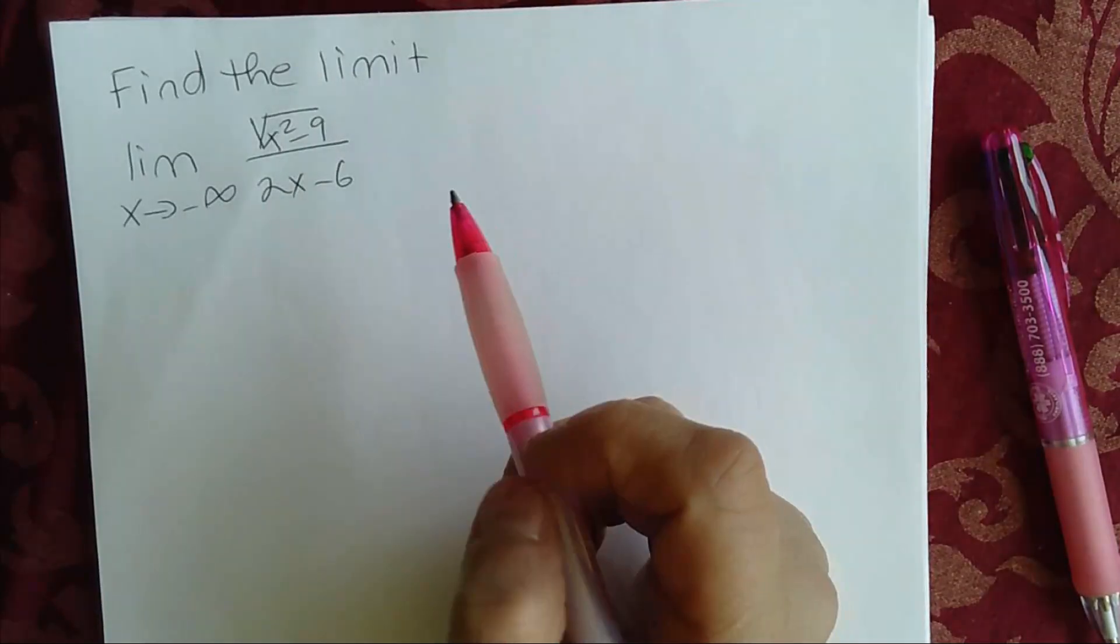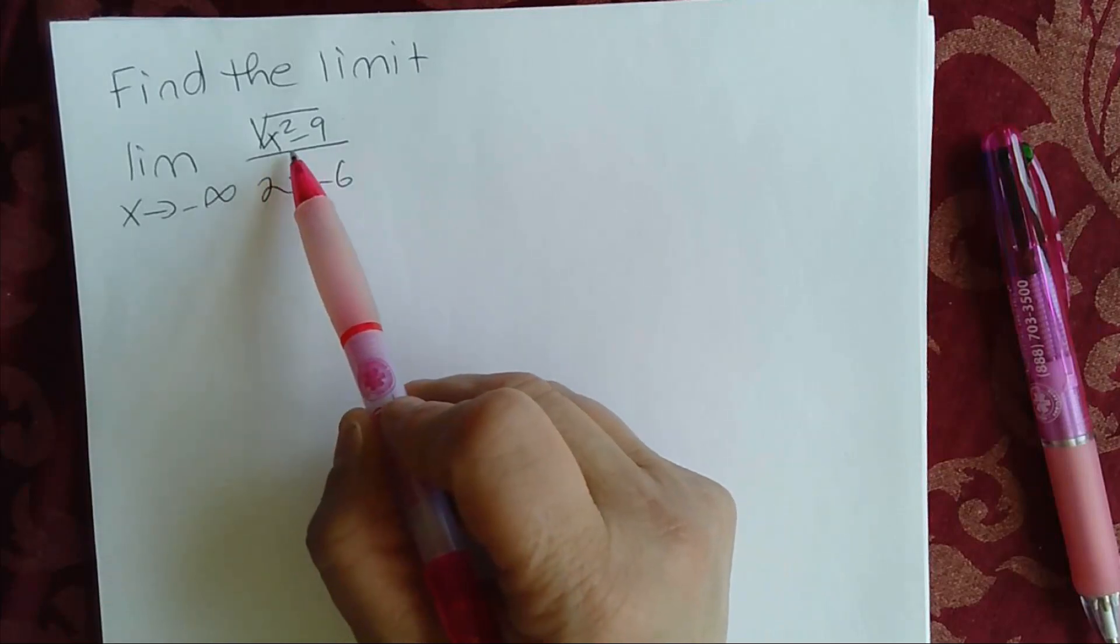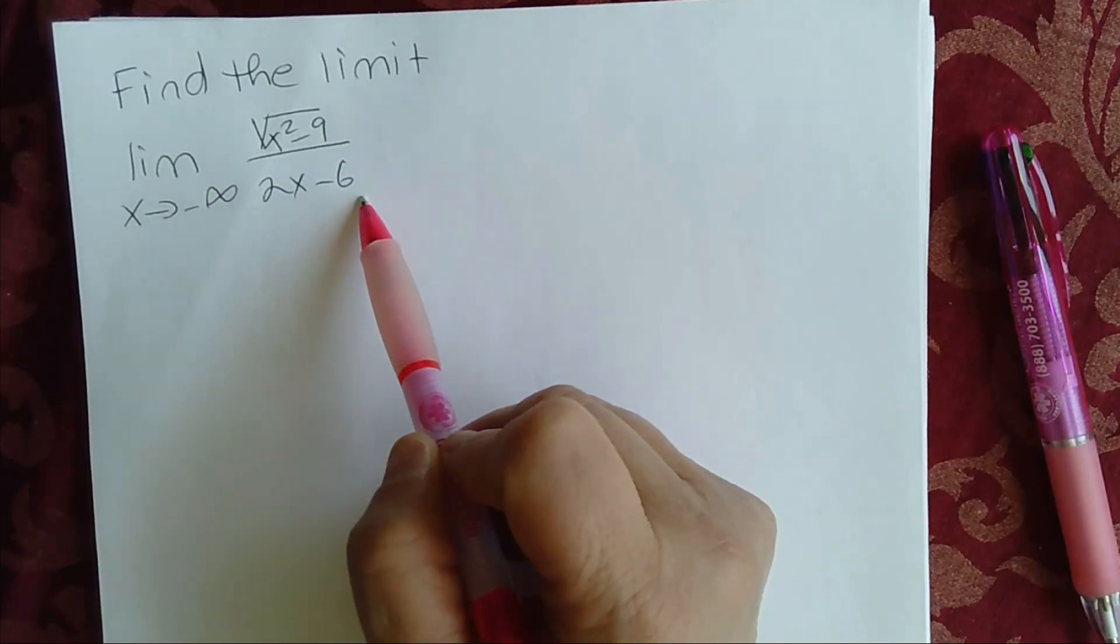Hello everybody. Today we're going to find the limit of square root of x squared minus 9 divided by 2x minus 6 as x approaches negative infinity.